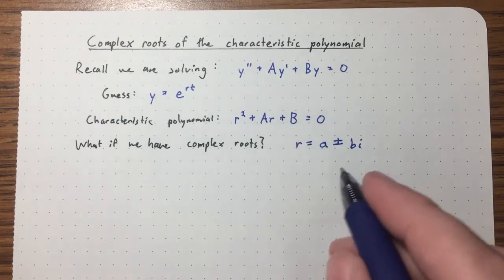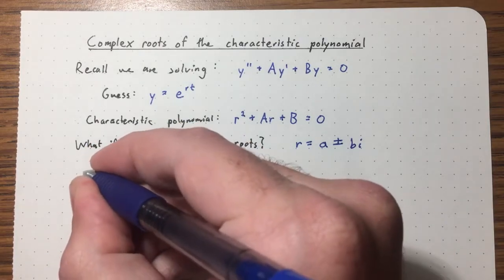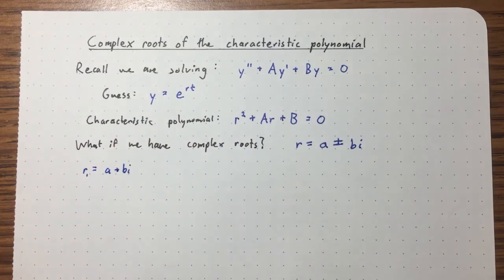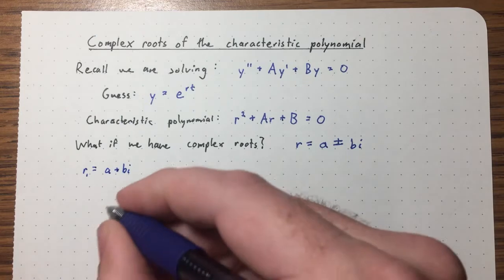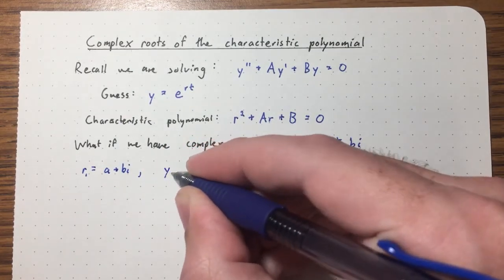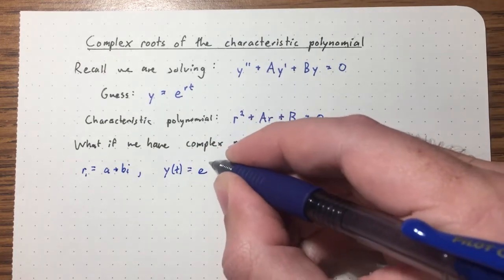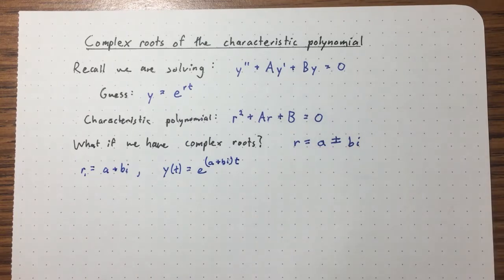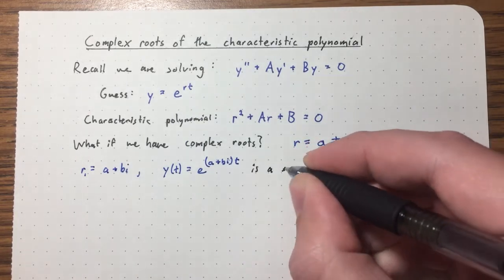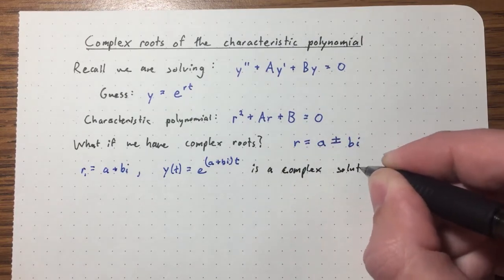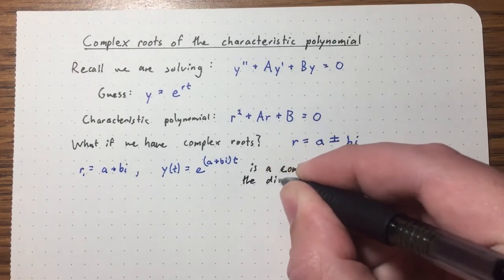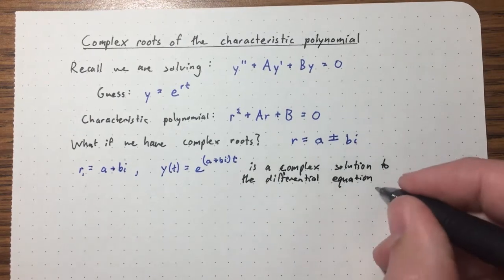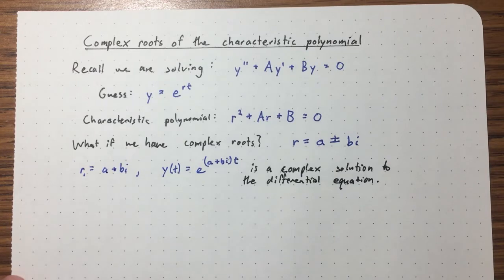Let's start by considering — we can pick either root. Let's take r1 = a+bi. What we did in the real root case is we just said that e^(r1·t) = e^((a+bi)t) is a solution. But it's a complex solution to the differential equation. And likewise with the other root a−bi, we get a complex solution e^((a−bi)t).